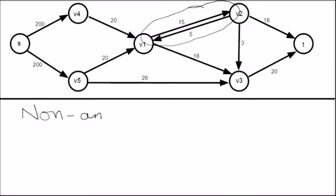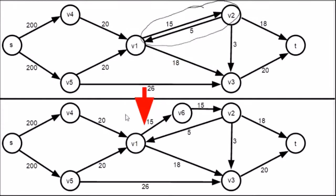This is a non-anti-parallel edge. And to get rid of it, we need to change this graph. What we have done here is we have added another vertex, V6. And the graph is still the same. We have just added an edge with capacity 5 from V2 to V1, and two edges with capacity 15 from V1 to V6 to V2.